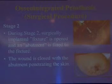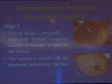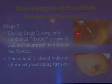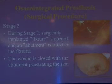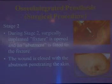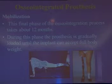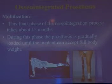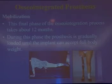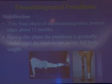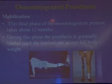After implantation of the threaded fixture, you have to wait at least six months for the osseointegration process to take place. After about six months, the second stage of surgery comes into picture. During the second stage, the surgically implanted fixture is opened and an abutment is fitted to the fixture. The wound is then closed with the abutment penetrating the skin. After that, the mobilization and physiotherapy part begins. This final phase of the osseointegration process takes about 12 months, during which the prosthesis is gradually loaded until the implant can accept full body weight.